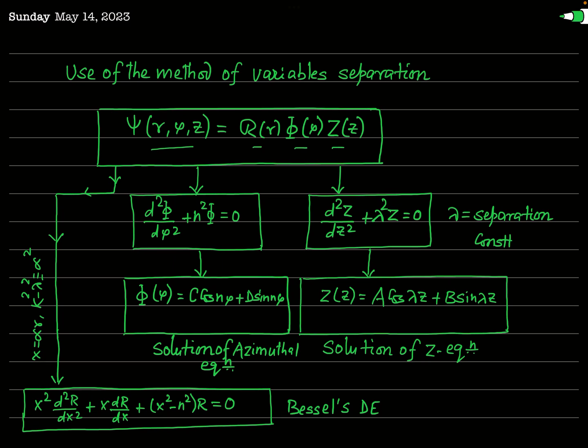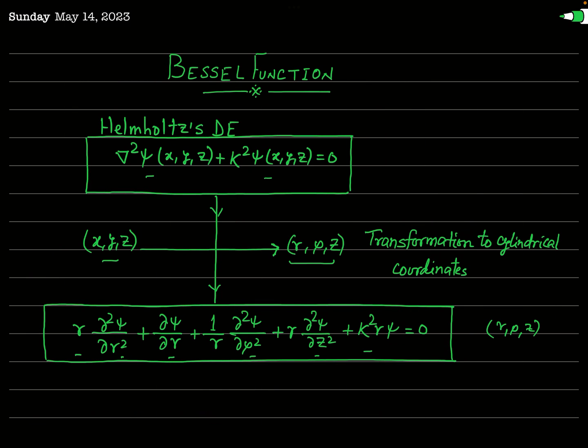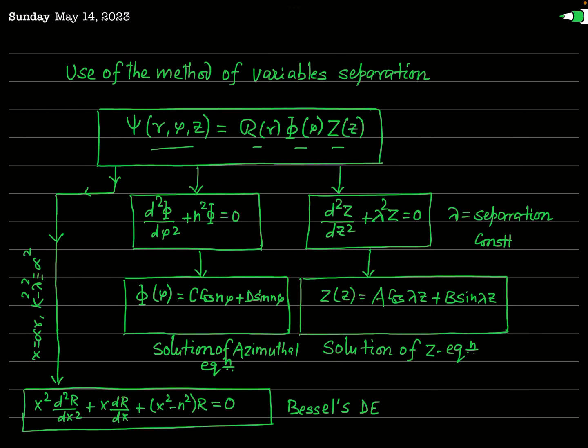We find all the derivatives present in the equation — d²ψ/dr², dψ/dr, d²ψ/dφ², and d²ψ/dz² — and substitute them. The equation then splits into three different ordinary differential equations after applying variable separation.